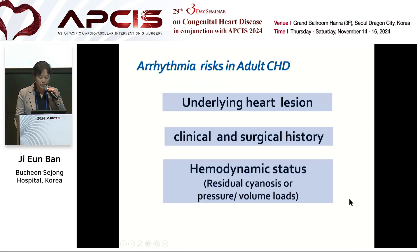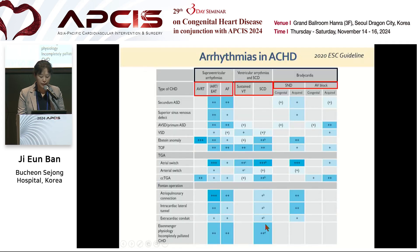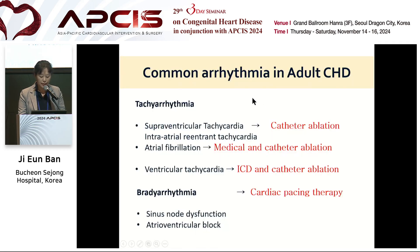Advanced management and surgical outcome allowed survival and increased risk of arrhythmia in adult congenital heart disease. The arrhythmia risk is dependent on underlying heart anatomy, prior surgical history, and hemodynamic status. This table shows arrhythmia prevalence in adult congenital heart disease. All spectrum of arrhythmia can be encountered. Darker blue indicates higher risk of arrhythmic event. The common tachyarrhythmias are supraventricular tachycardia, especially intra-atrial reentrant tachycardia (IART).